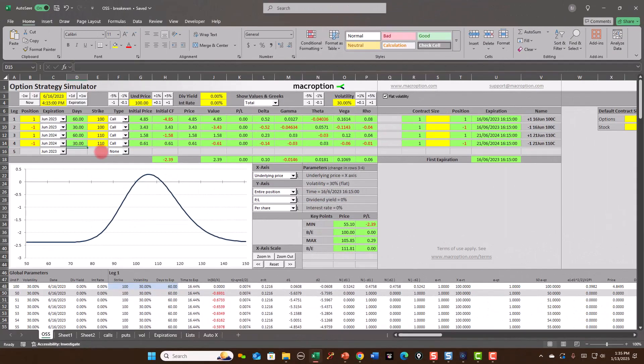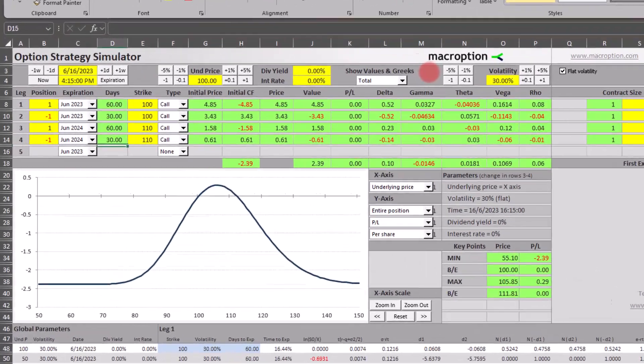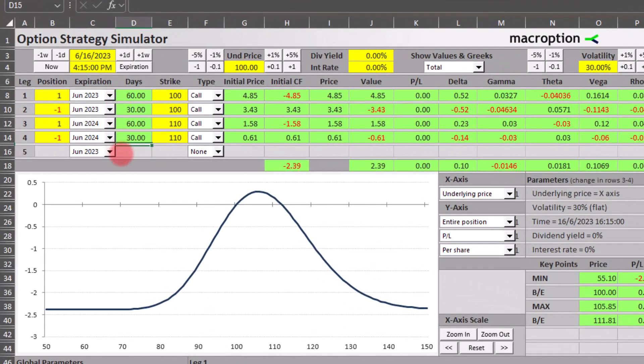So now this is an Excel spreadsheet that you can actually buy. It's a one-time fee from Macro Option. It's really a nice little program. There's all different types of Excel sheets that he sells on there for options. This one allows you to do multiple strategies up to five. So let's take a look at this.